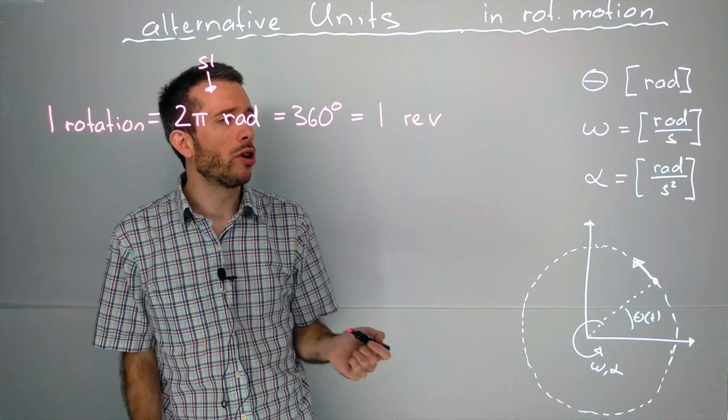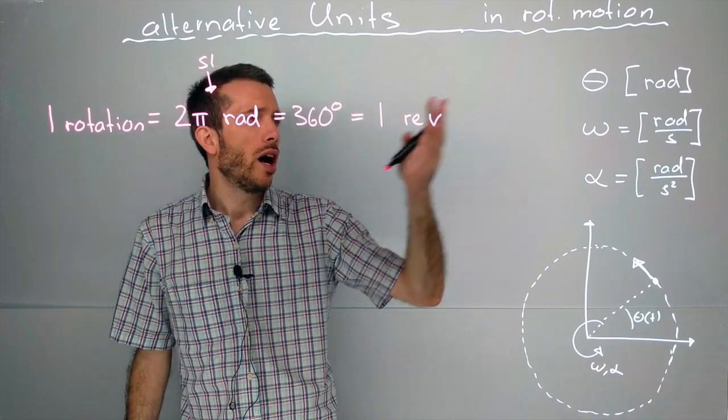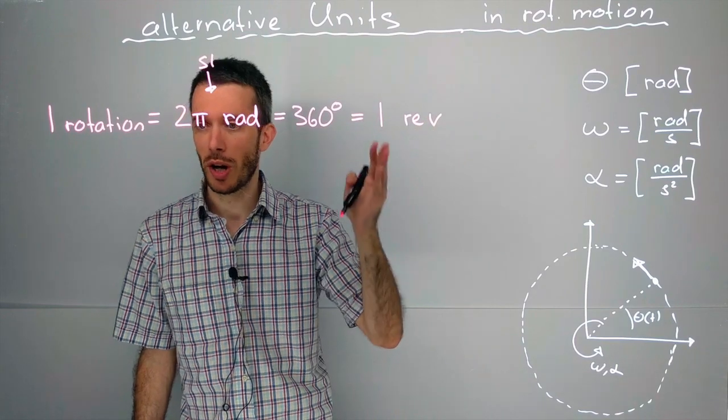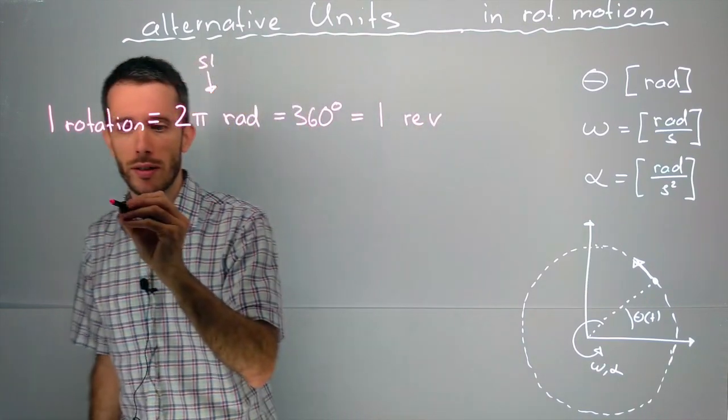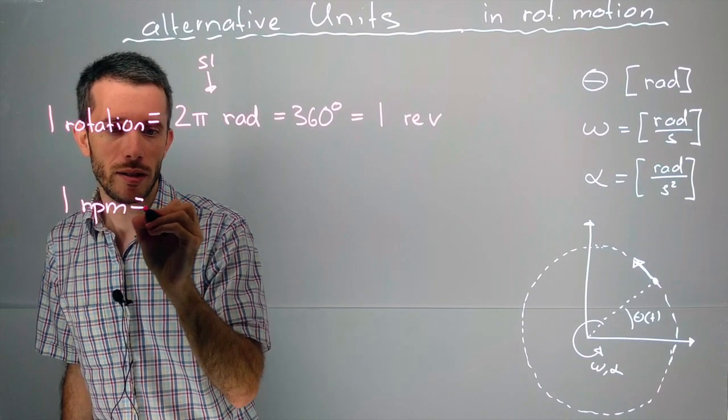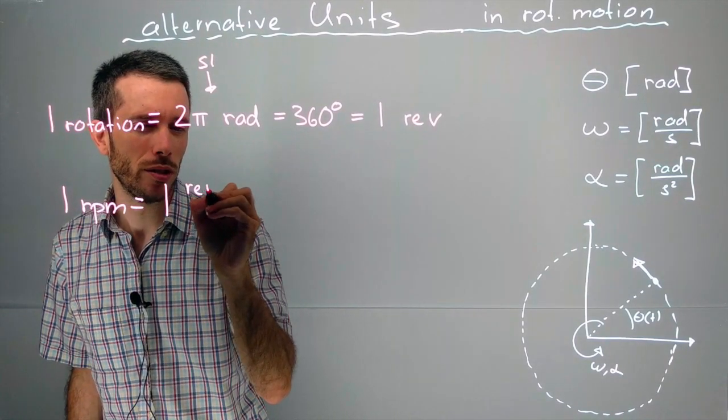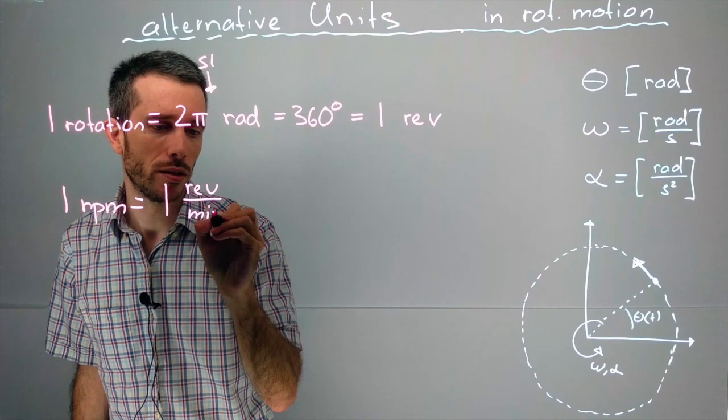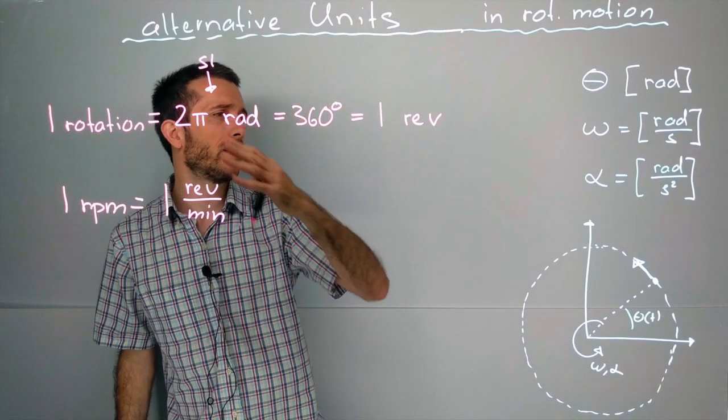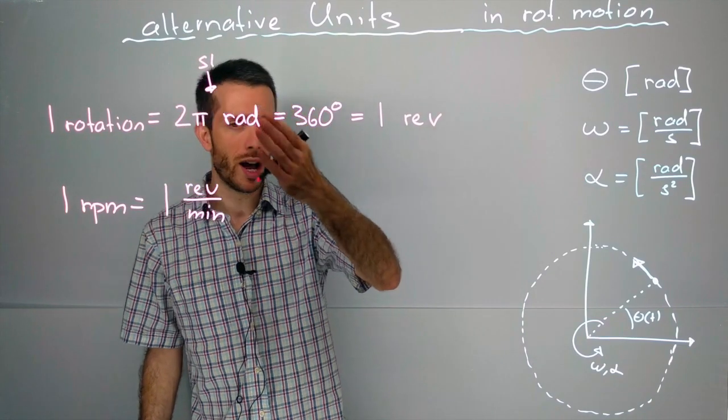Now, just to make problems more complicated, often angular speeds are given in revolutions per minute, or RPM. So what is an RPM? 1 RPM is equal to 1 revolution per minute. Now, if you want to play it safe, you will convert this into the SI standard unit based on radians and seconds.